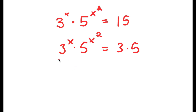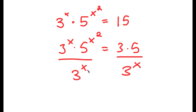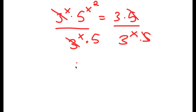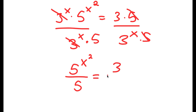Now I'm going to divide both sides by 3 to the power of x as well as 5. For my left-hand side, both the 3 to the power of x terms cancel out. For my right-hand side, both the 5's cancel out. So now I get 5 to the power of x squared over 5 is equal to 3 over 3 to the power of x.